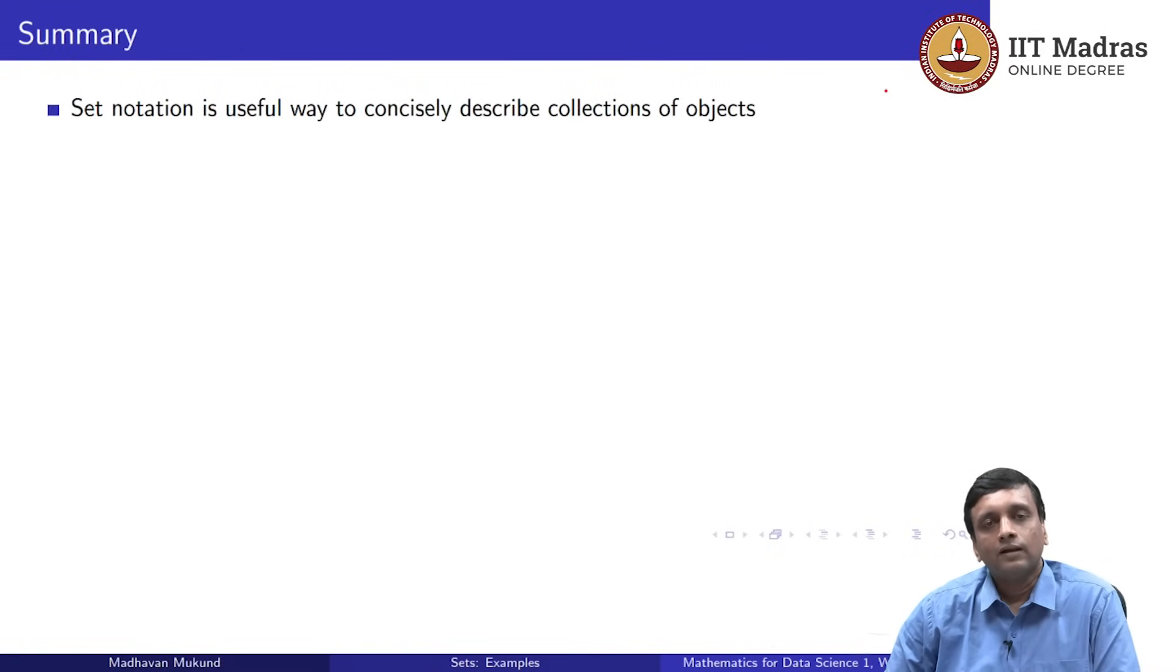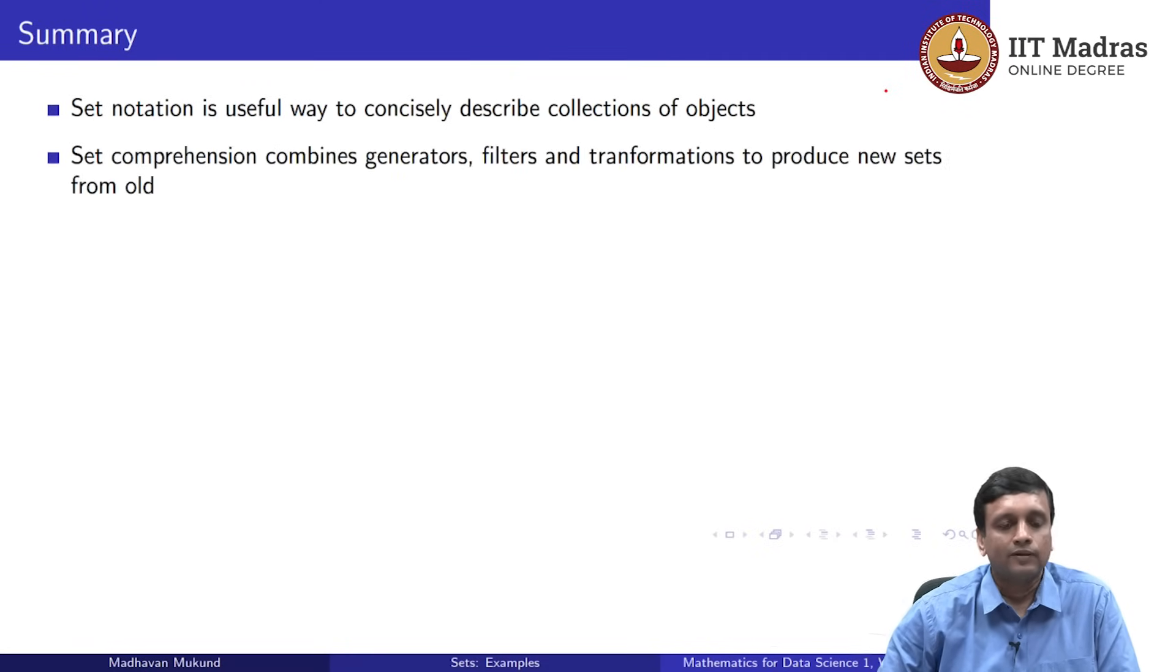To summarize, we use set notation because it is a very useful and precise way to talk about collections of objects. And if we use it nicely, it is also a concise way. Sometimes instead of writing out a long sequence of values, we can actually describe it using a condition. This is typically where we use set comprehension.